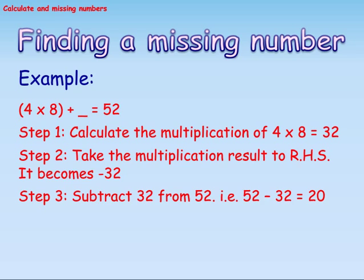Finding a missing number. Example: Step 1 - Calculate the multiplication of 4 into 8, which equals 32. Step 2 - Take the multiplication result to the right-hand side; it becomes minus 32. Step 3 - Subtract 32 from 52, that is 52 minus 32 equals 20.